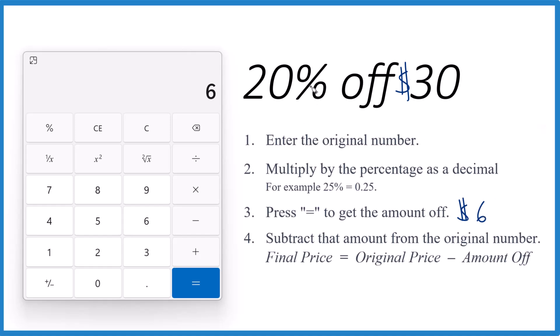If we want to know 20% off 30, what we end up with when we're done, we take the original price, 30, and we subtract the amount off. That's 6.